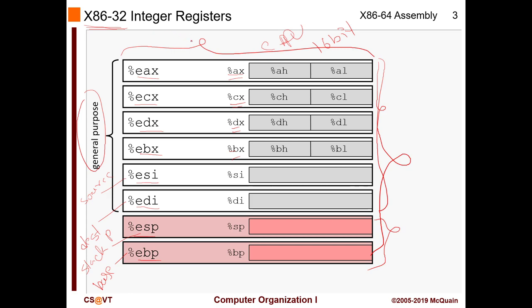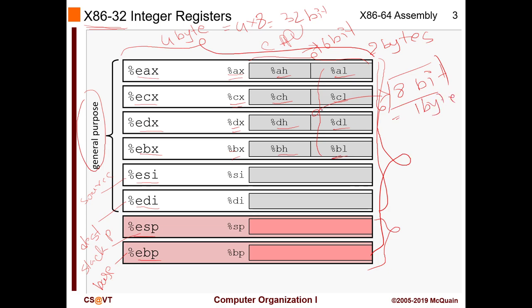Each of these registers is four bytes — four times eight equals 32 bits, which is why it's called a 32-bit system. For backward compatibility, AX is 16-bit or two bytes. AX also has two sub-versions: AH means A-high and AL means A-low. CX, DX, and BX have the same breakdown. These sub-registers are one byte each and provide backward compatibility with 8-bit — you can't go lower than one byte.